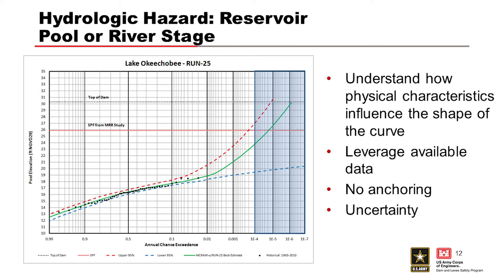Ask your H&H engineer why a curve is bending where it is — make sure it makes sense. This is all based on conservation of mass: inflow minus outflow equals change in storage. We also want to look for good agreement between the observed stages and the actual hazard curve. If our model can well represent what we've already seen at the reservoir, then we have more confidence that it can well represent the extrapolated portion of the curve.